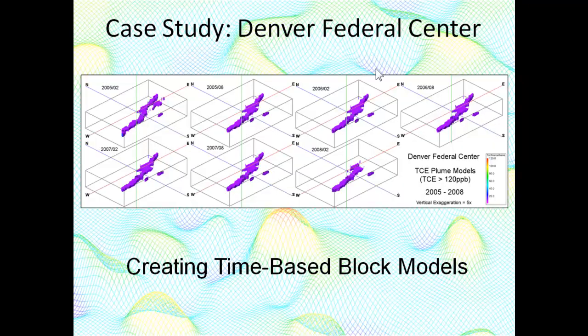The original dataset includes over 40 elements and compounds sampled at least twice a year over a 20-plus year period, translating to 1,600 possible models. We limited our study to a single contaminant, trichloroethylene, or TCE, sampled from 2005 to 2008. This proved to be a poor choice, because the plume didn't do much during that period, as shown by the models on this slide.